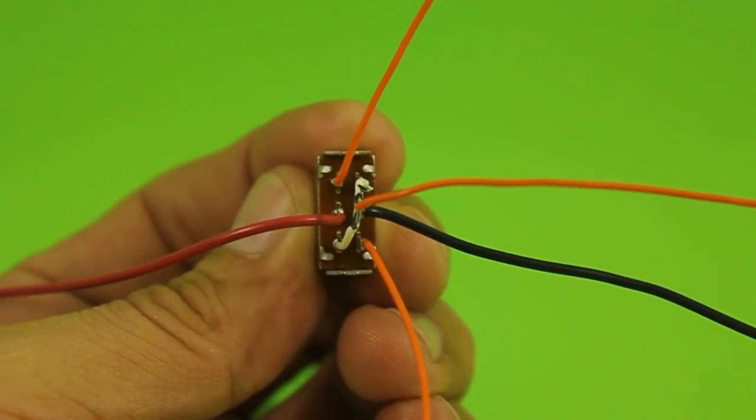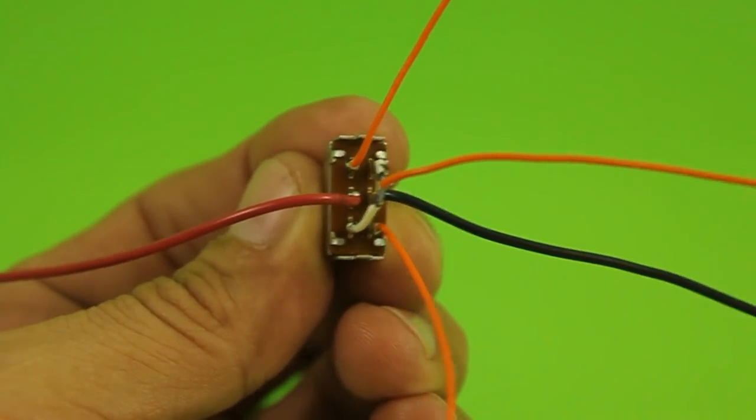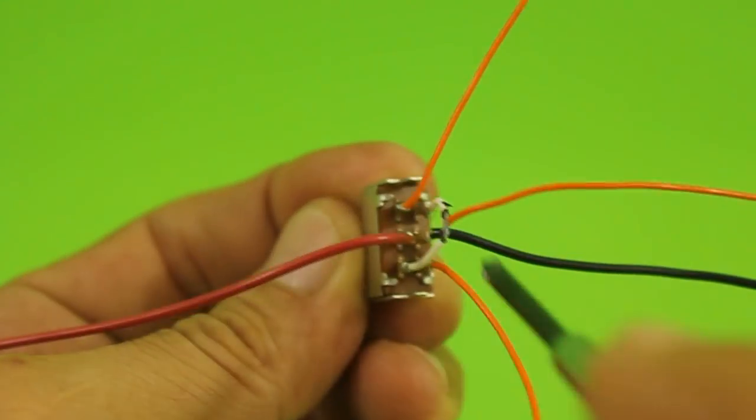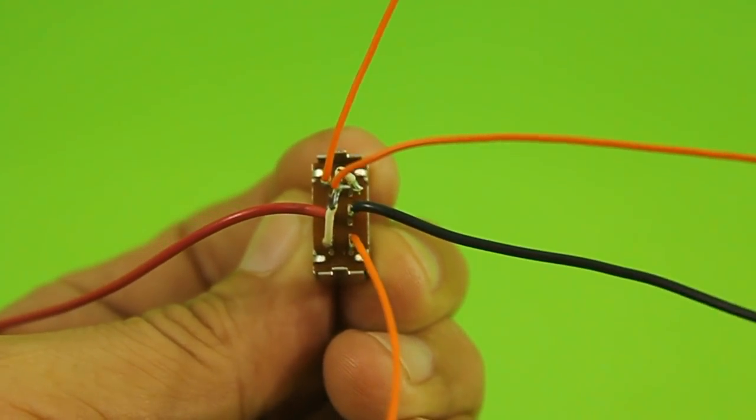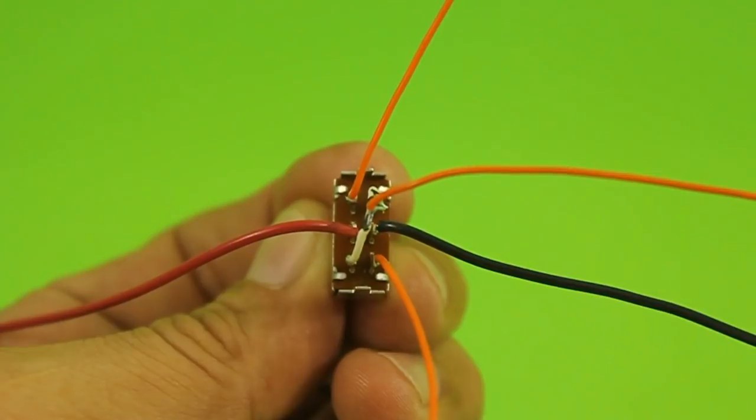Here we can see the connections of the switch. In the central pins of the switch, we connect the negative and positive of the battery.